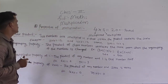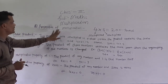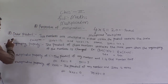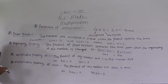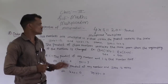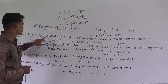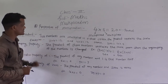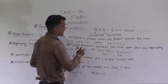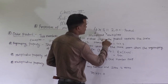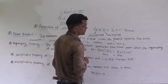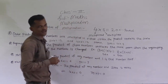Now we will learn the properties of multiplication. The first property is the order property. When 2 numbers are multiplied in either order, the product remains the same.